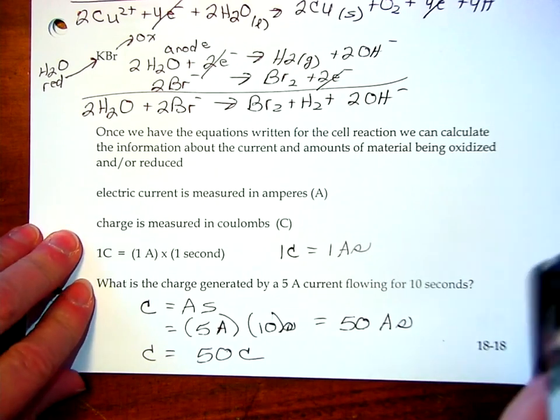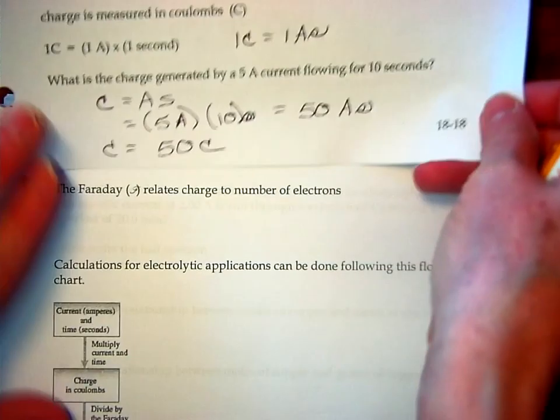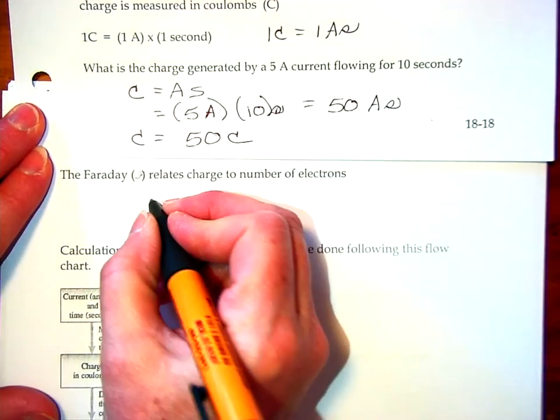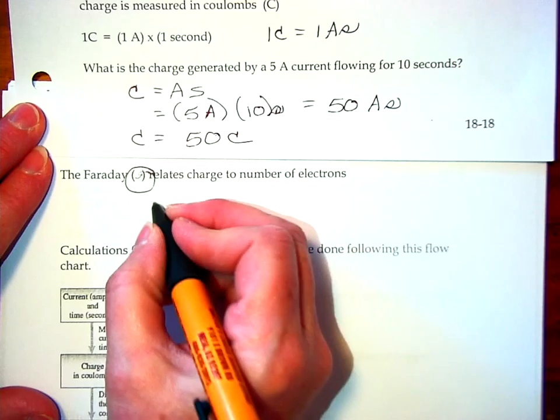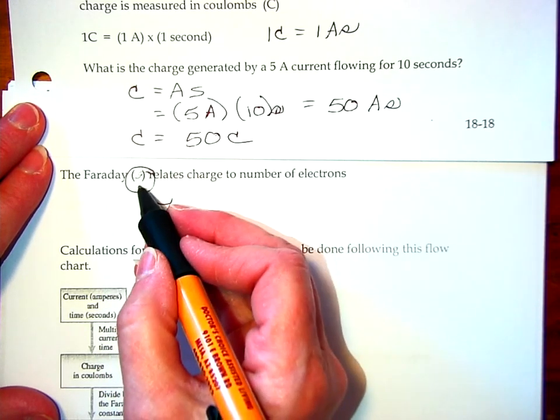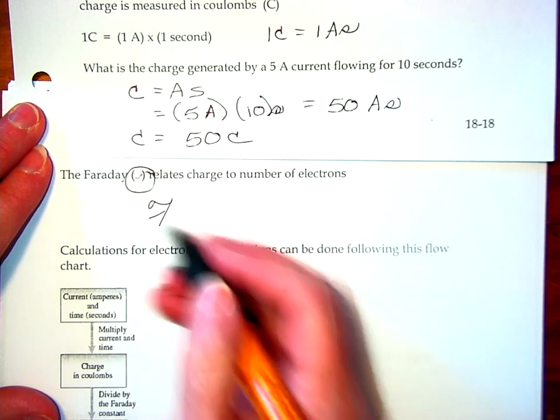Now, when we look at this, we use the Faraday constant to relate the charge in coulombs to the number of electrons. You will often see the Faraday written kind of like this. I wasn't able to type it, so I did try and use a script font for the F to represent the Faraday.